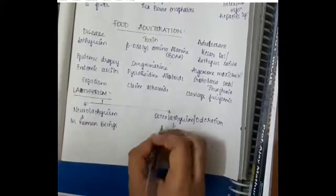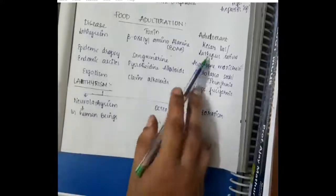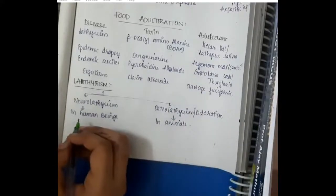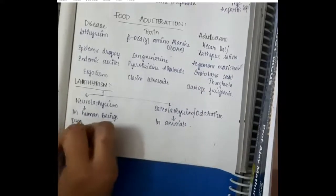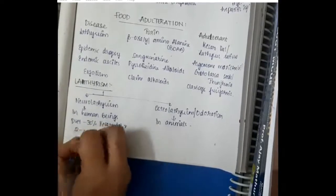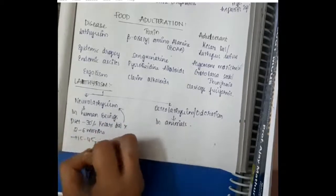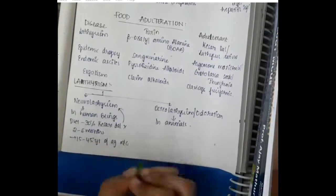Neurolatirism occurs in human beings whereas osteolatirism is present in animals. It occurs due to kesari dal. In human beings, if the human being takes diet containing 30% of kesari dal for 2-6 months, then that can lead to neurolatirism.